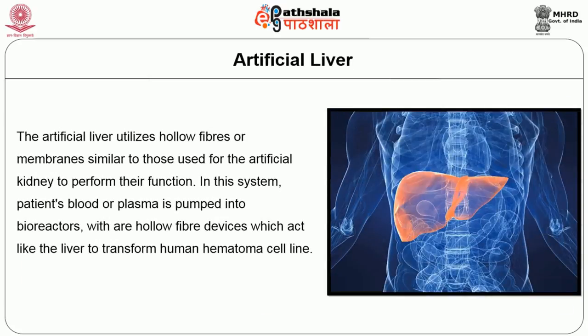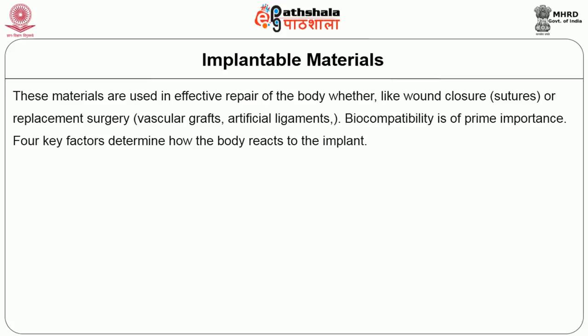The artificial liver utilizes hollow fibers or membranes similar to those used for the artificial kidney to perform its function. In this system, the patient's blood or plasma is pumped into a bioreactor with a hollow fiber device which acts like the liver to transform human hepatocyte cell lines.